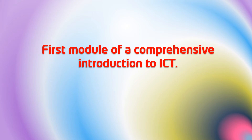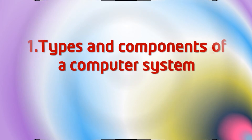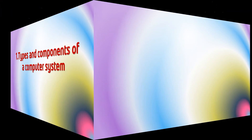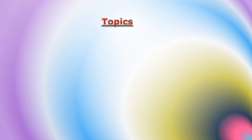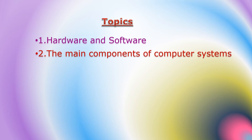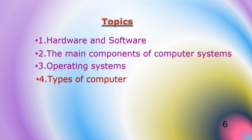This course is the first module of a comprehensive introduction to ICT. Section 1 covers types and components of computer systems. In this section you will learn about hardware and software, the main components of computer systems, operating systems, and types of computer.